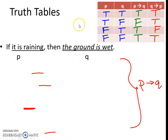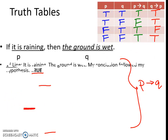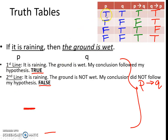Please copy the table: true, true, true, true, true, true, false, false, false, false, false, true, true. I'm going to use an example — a conditional statement: if it is raining, then the ground is wet. First line: it is raining, the ground is wet — my conclusion followed from the hypothesis, so the conditional is true, and even going the other way, it's true.